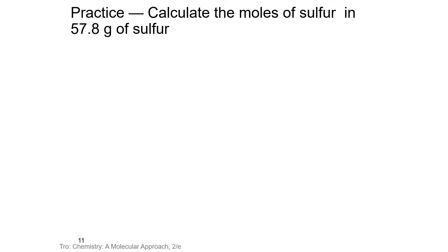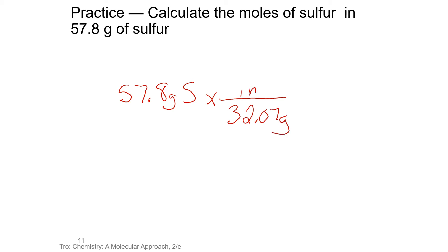Here's a practice for you to try — pause the video and calculate the moles of sulfur in 57.8 grams of sulfur. We would start with 57.8 grams of sulfur and use the periodic table to look up sulfur's molar mass. Multiplying across the top and dividing by the bottom, we end up with 1.80 moles of sulfur. Since 57.8 is larger than 32, we'd expect to end up with a value larger than one.